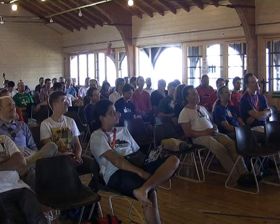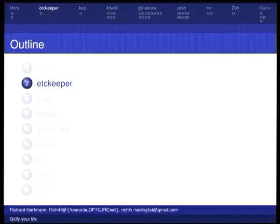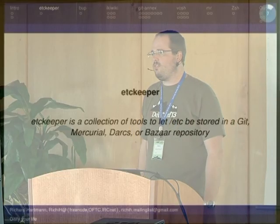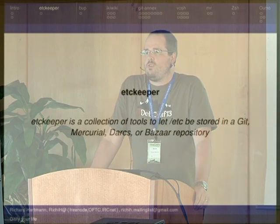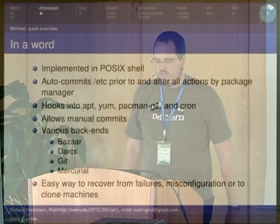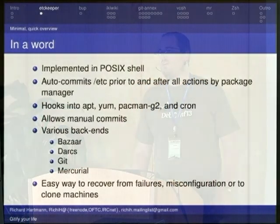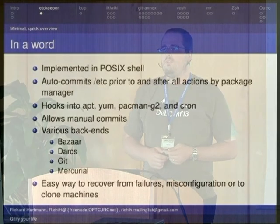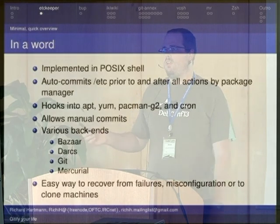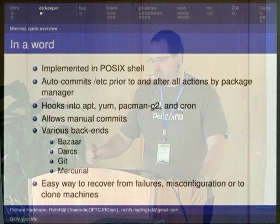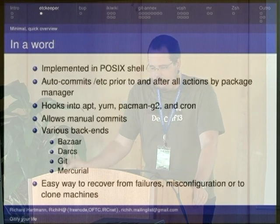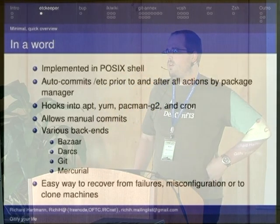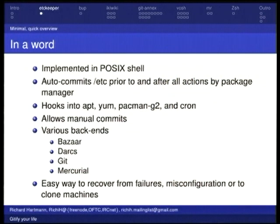Let's move to the first tool, ETC Keeper. Some or maybe even most of this audience will have heard of it. It's a tool to basically store your /etc in pretty much every single version control system you can think of. It's implemented in POSIX shell. It autocommits everything in /etc, basically at every opportunity. You may need to write excludes, for example, for your network config when you have DHCP, but otherwise it's really cool. It hooks into most or maybe all of the important package management systems, so when you install new packages, even on SUSE or whatever, you can just have it commit automatically.